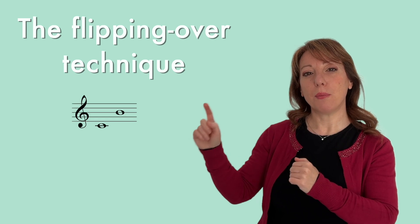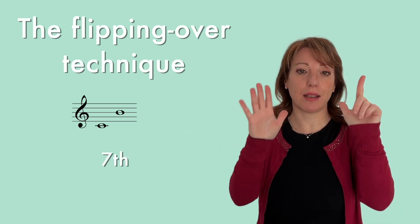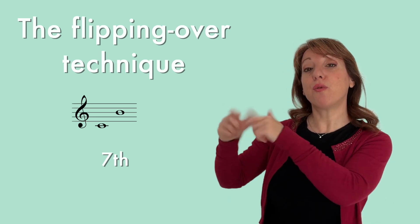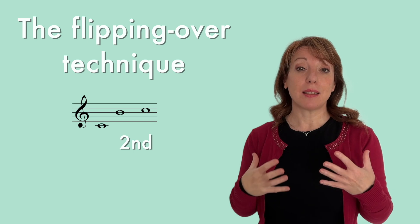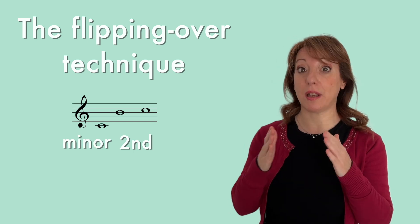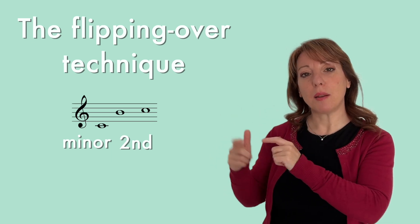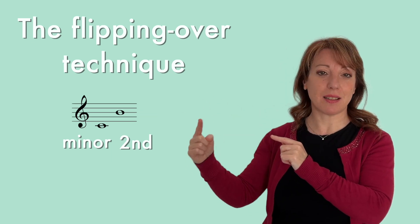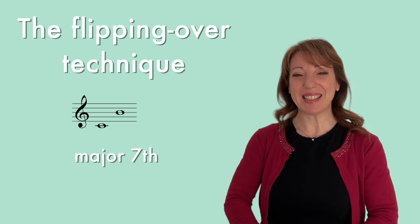For example, this interval here, C-B, it's a seventh because seven notes. So it's a seventh. So if we flip it over, we find this second, B-C, just one step. This is a minor second because it's made up of only one semitone instead of a tone. So the second is minor in this case. And if we flip it over, minor becomes major, second becomes seventh. So it's a major seventh. There you go. Now you know it. Easy.